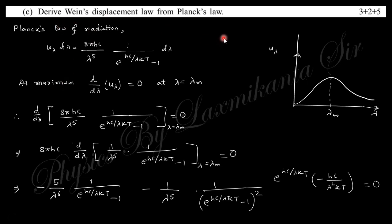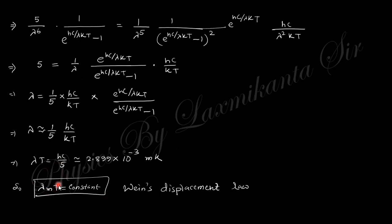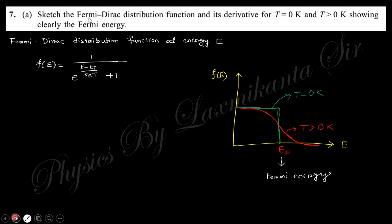Next question: derive Wien's displacement law from Planck's radiation law. At the wavelength λ_m of maximum intensity, the derivative of the Planck distribution with respect to λ equals zero. Taking the derivative of the spectral energy density with respect to λ and setting it to zero at λ = λ_m gives a transcendental equation. Under the approximation valid at low temperature (large argument), this simplifies to yield Wien's displacement law: λ_m · T = constant.